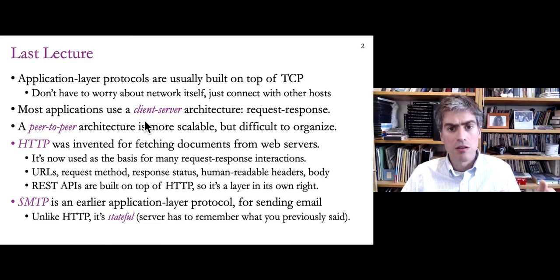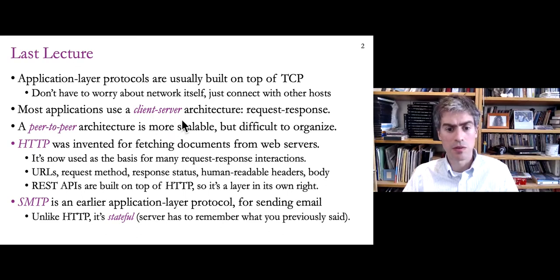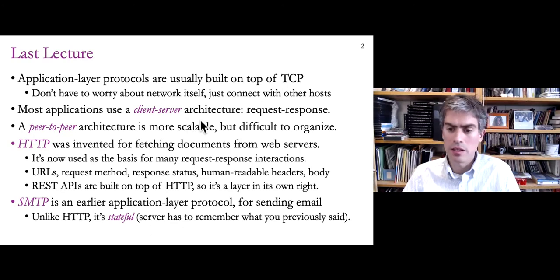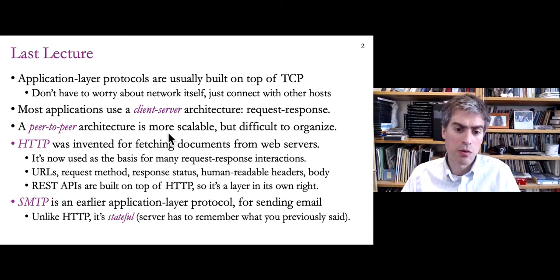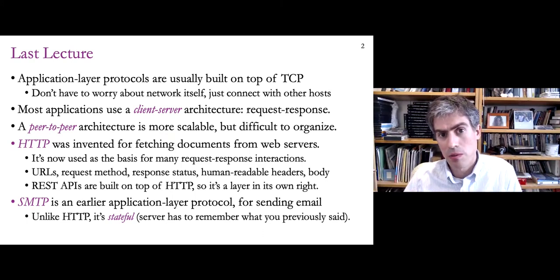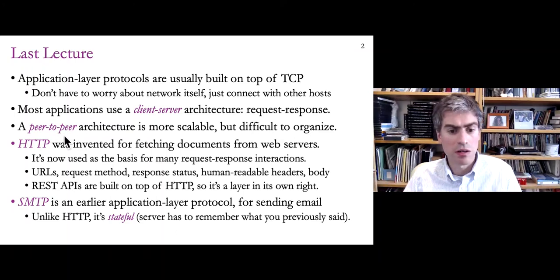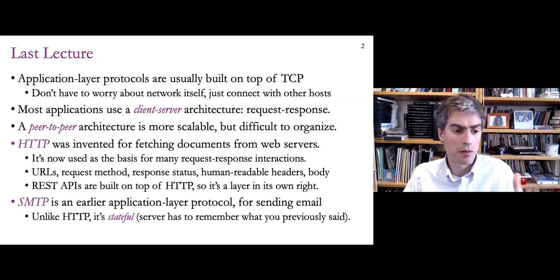We talked about two different styles of application architecture. A client-server architecture was the most common, involving servers that are always on and always listening, storing a lot of data and handling requests, while clients make the requests and servers generate responses. The alternative was a peer-to-peer architecture which is more scalable but much more difficult to organize because you have to get customers' machines to do all the work even though they are moving around and not always on.